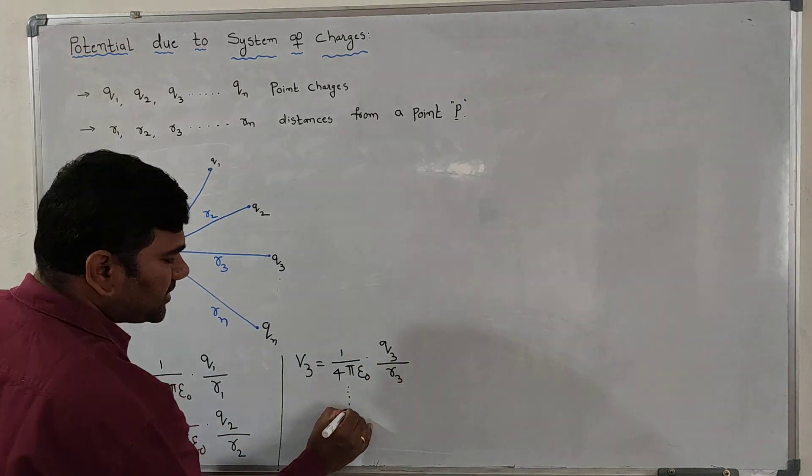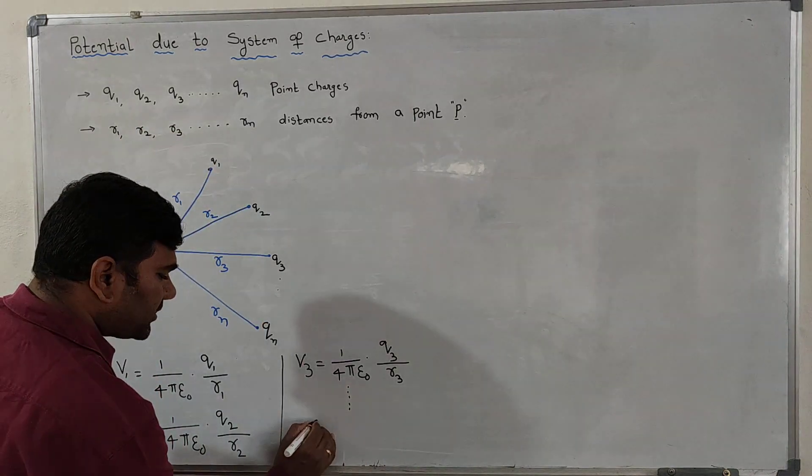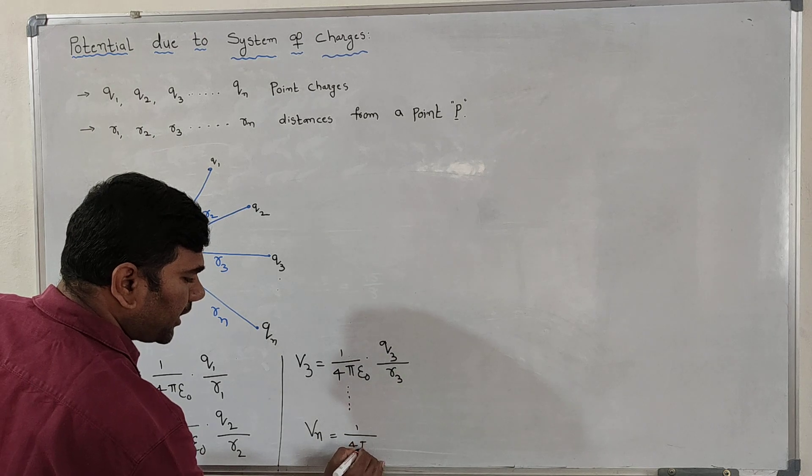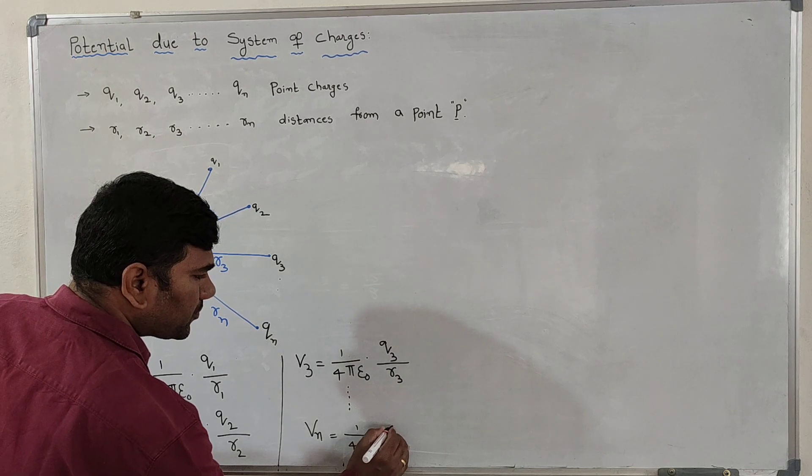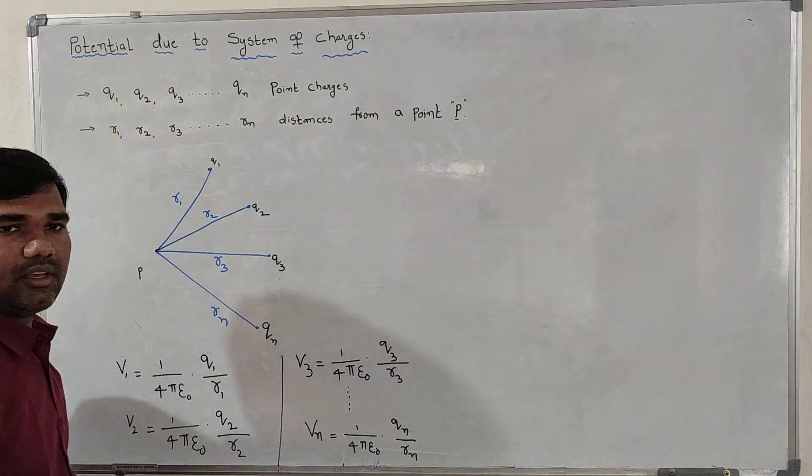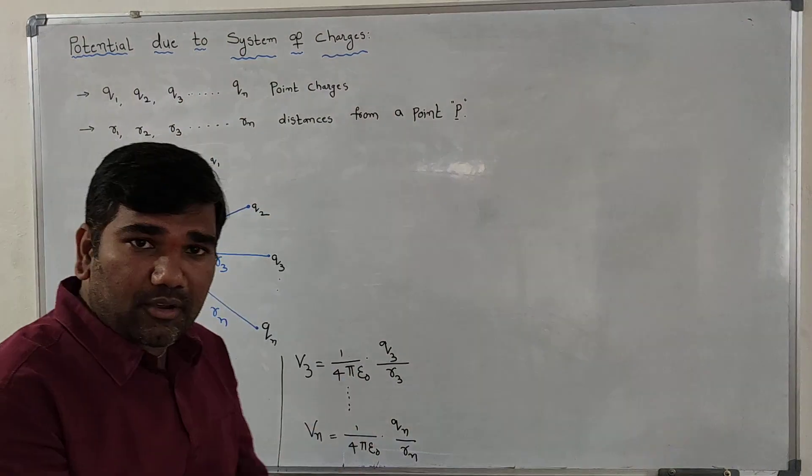So we can write these equations for n charges. Therefore, for the nth charge, the potential is 1 by 4πε₀, Qn by Rn. But we have to find the potential due to system of charges,